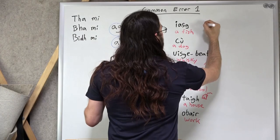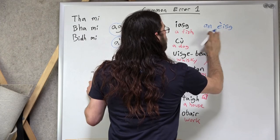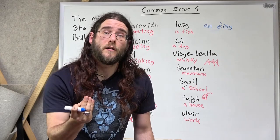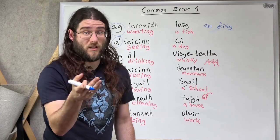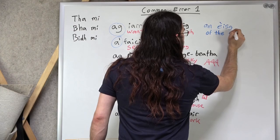So let's go. Bha mi ag iarraidh an èisg. Bha mi ag iarraidh an èisg. Now, why is it changing? Because we're saying, I am wanting of the fish.